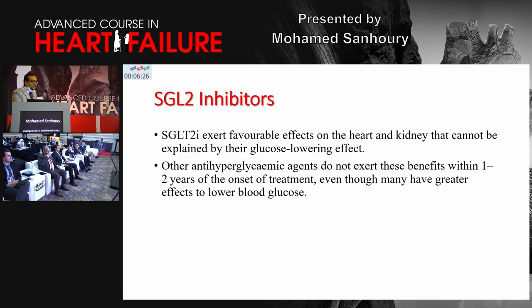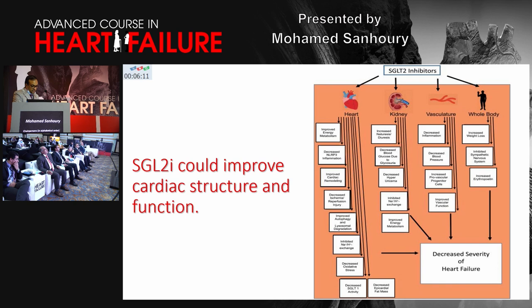SGLT2 inhibitors improve both cardiovascular and renal outcomes, independent of their blood glucose-lowering effect, which is actually much less than other hypoglycemic agents. At the cardiac level, they improve energy metabolism and reduce oxidative stress. At the renal level, they induce natriuresis and diuresis, potentially reducing the need for loop diuretics. At the vascular level, they reduce vascular inflammation and fibrosis. At the whole-body level, they reduce sympathetic nervous system activation and increase erythropoietin, thereby improving the overall outcome in heart failure patients.